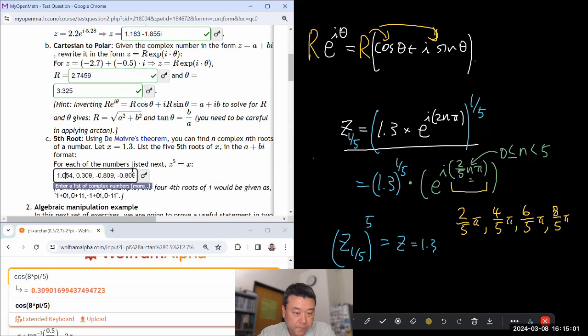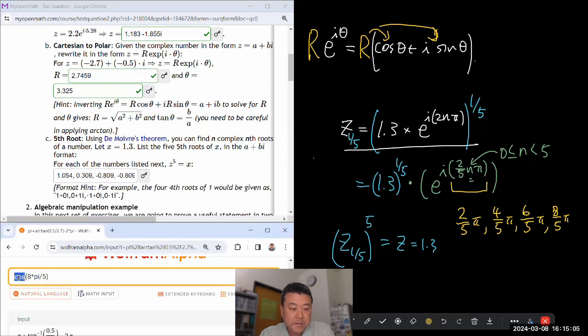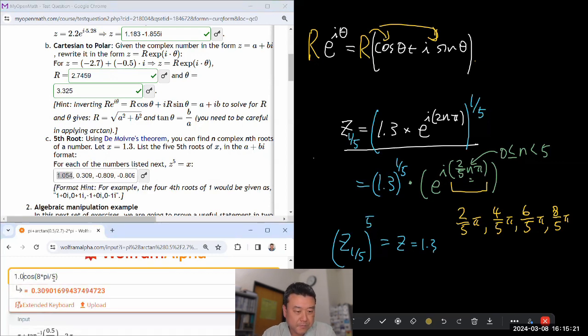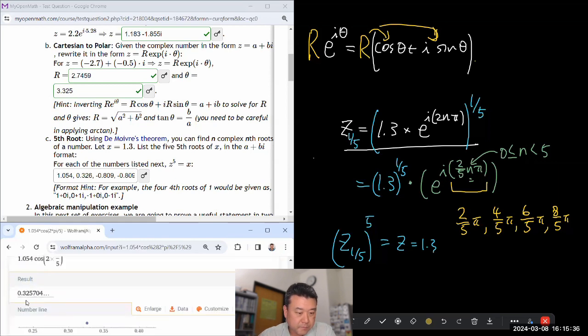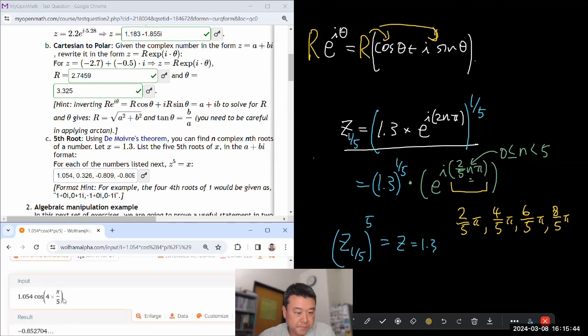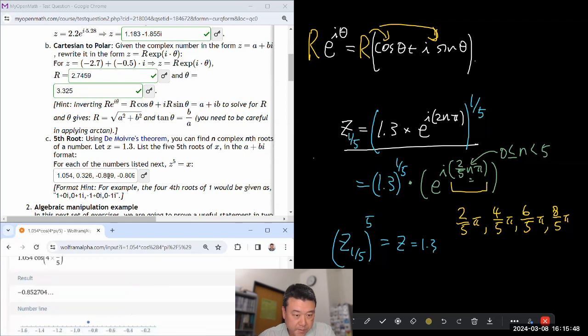Now I'm going to do all the real parts first, then do the imaginary parts. Cosine of 2 times pi over 5 - that's 0.309. Then minus 0.809, then minus 0.809 again, then 0.309. Wait, I made a mistake - I keep making this mistake. I have to multiply it by 1.054, so all those numbers need to change. That's 0.326, then minus 0.853. Those are the real parts.